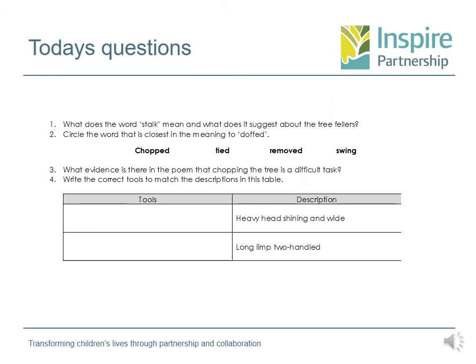These are your questions for today's home learning. The first is: what does the word 'stalk' mean, and what does it suggest about the tree fellers? I would start by reading around where that word appears inside the poem, and seeing if that makes any sense. If it still doesn't quite make sense, you could look it up or clarify with a grown-up at home. Then there's a question asking you to circle the word closest in meaning to 'doft.'